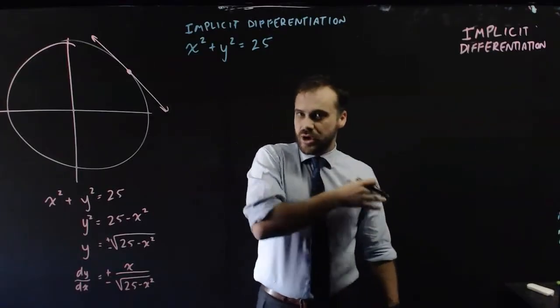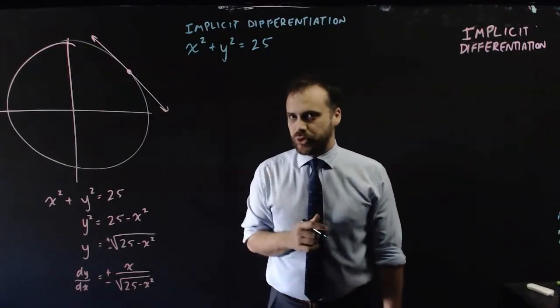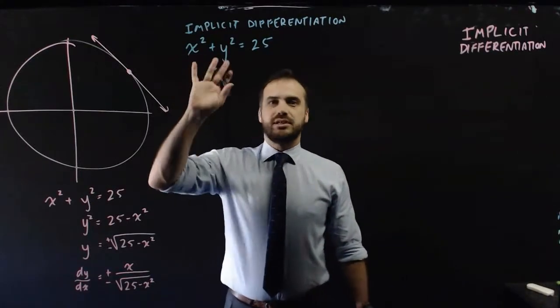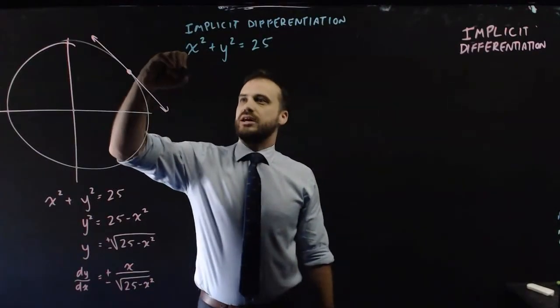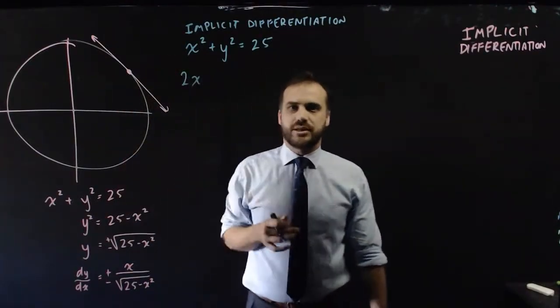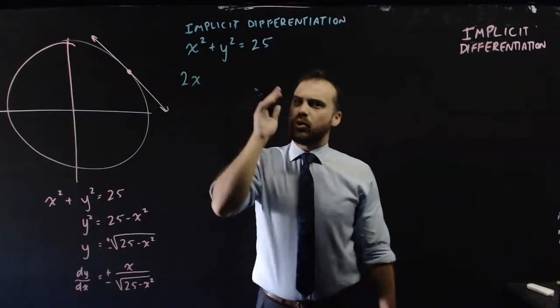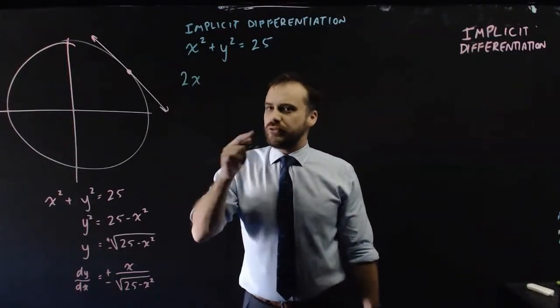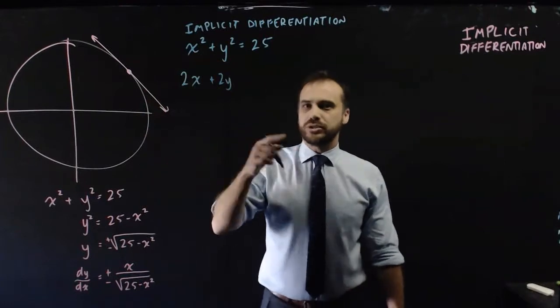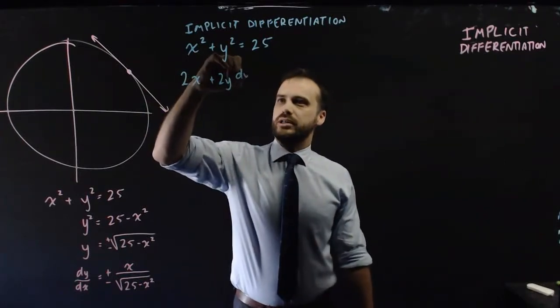Now I'm going to show you the process before I explain how it works. Anytime you see an x term, just differentiate it as usual. x squared becomes 2x. Anytime you see a y term, you differentiate it, but then you multiply it by dy/dx.